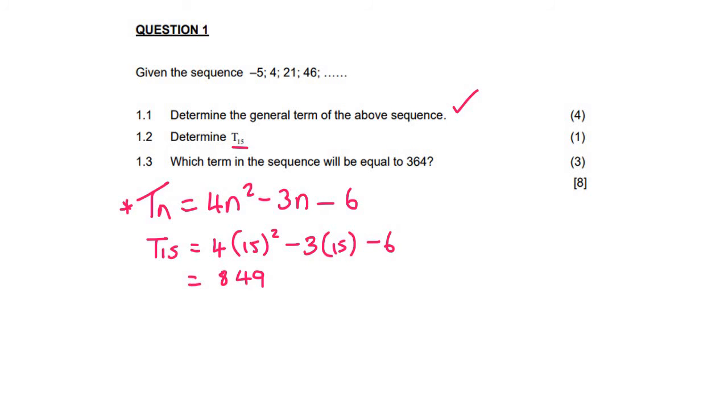Then for question 1.3, which term has a value of this? So now they're saying which term is equal to 364. So you're going to say 364 equals 4n squared minus 3n minus 6. We then get a trinomial if we take everything to the one side, and so 4n squared minus 3n minus 370.